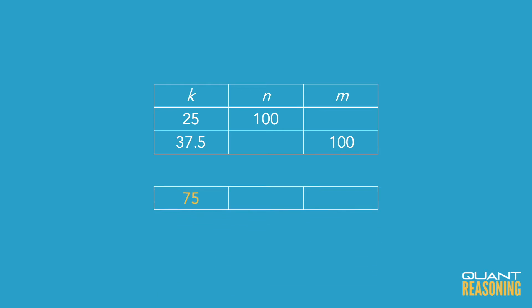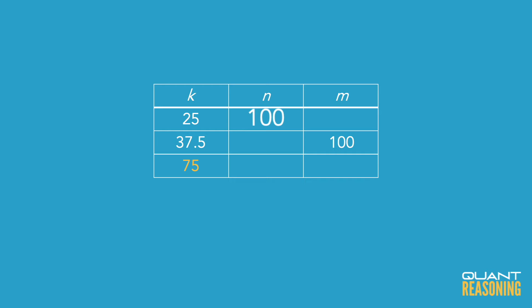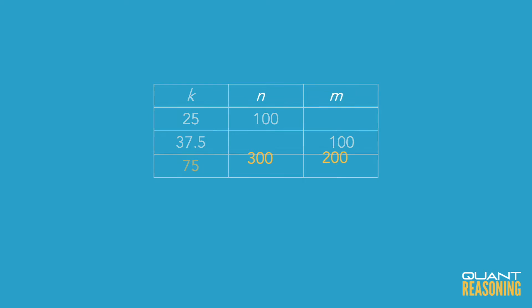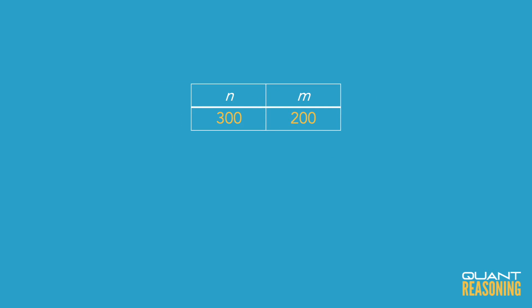I've decided to use 75 as the number of ratio units representing k. That means expanding the first ratio by a factor of 3: instead of 25 to 100, it's 75 to 300. The second ratio expands by a factor of 2: instead of 37.5 to 100, it's 75 to 200. Now in our consolidated ratio we can see that n to m is 300 to 200, which is 3 to 2.